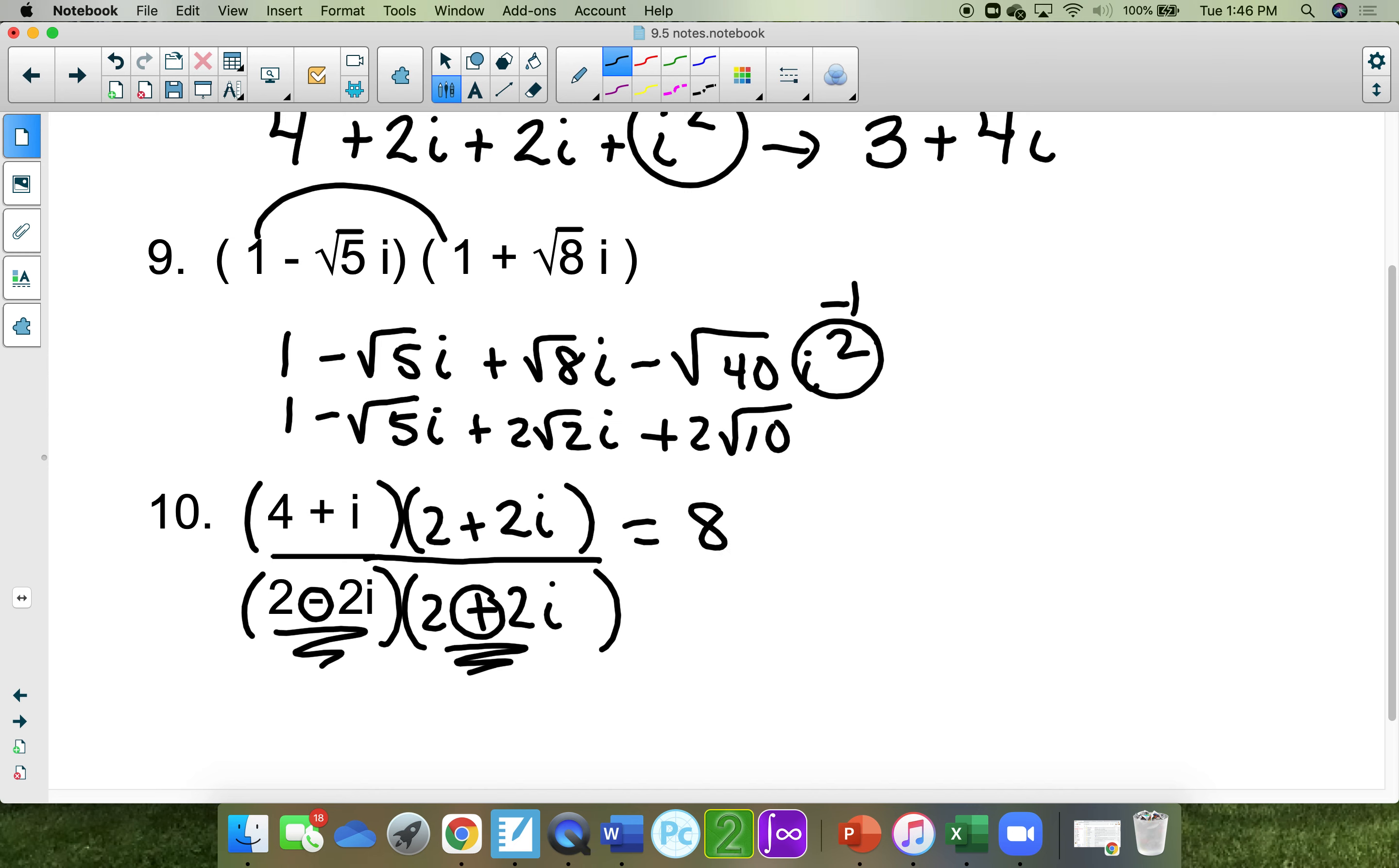4 times 2 is 8, plus 2i, plus 8i, plus 2i squared on the top. On the bottom is going to be 4 minus 4i, plus 4i, minus 4i squared on the bottom. If I multiply by the conjugate, the negative 4i and the positive 4i cancel each other out. This makes a negative 1, which makes this a positive 4, and a positive 4 and a positive 4 makes a positive 8 on the bottom. On the top, this makes a negative 2 that can go with the 8. That makes 6 plus 10i.